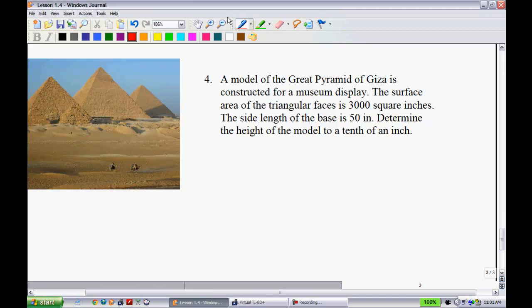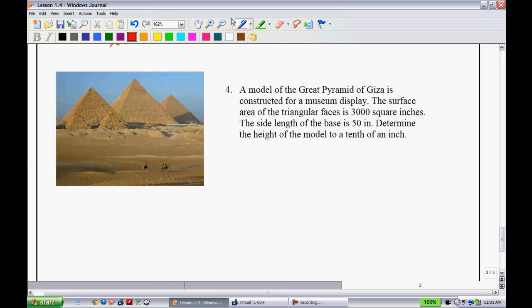All right. Now, I wanted us to try another one with the pyramids. The cones ones aren't too tough. Here we go. A model of the Great Pyramid of Giza is constructed for museum display. The surface area of the triangular faces is 3,000 square inches. The side length of the base is 50 inches. Determine the height of the model to the nearest tenth of an inch.